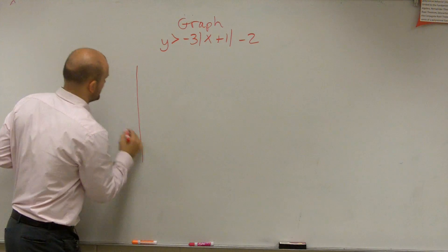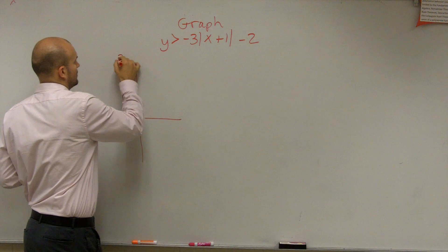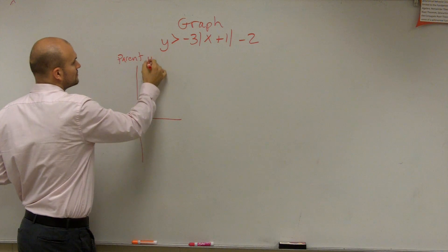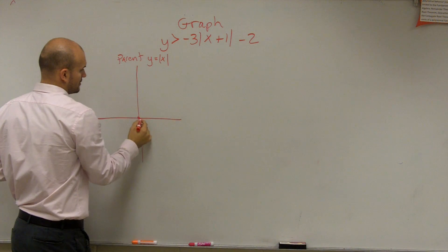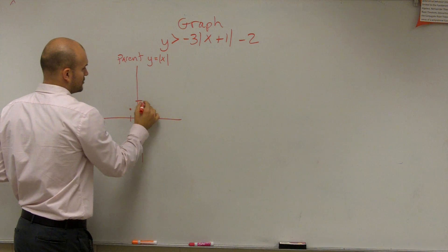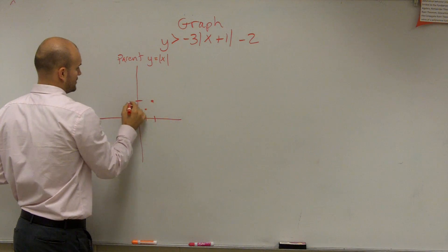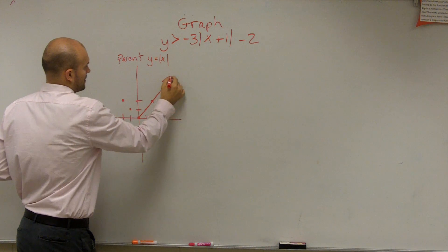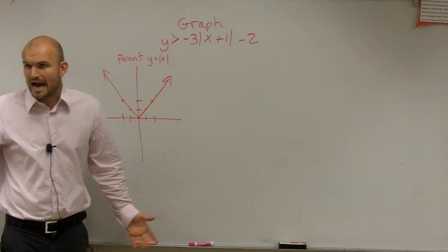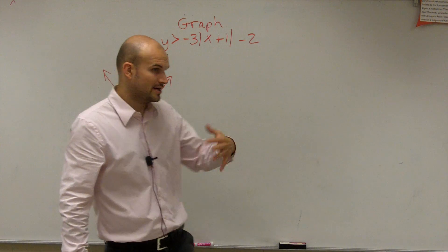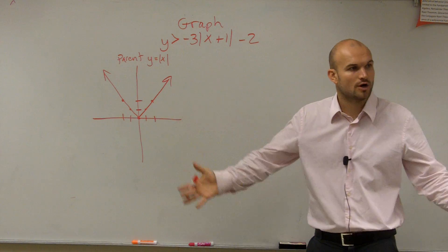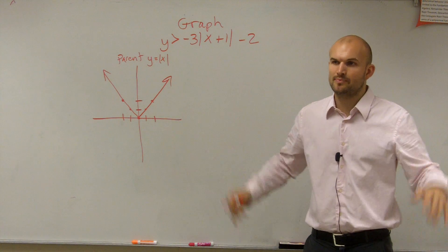So the first thing I'm going to do is write up the parent graph. You guys have to know the parent graph for the absolute value of x. It goes up 1 over 1, left 1 up 1, up 2 over 2, left 1, left 2 up 2. So it's a nice V and it looks like that. I always think it's important, it's in your notes, but sometimes when you're doing graphing you might want to just write it on your test or homework, just so you remember what the parent graph looks like.